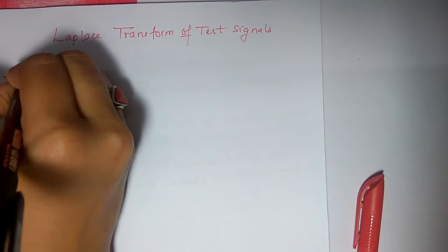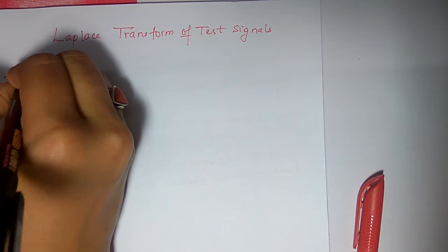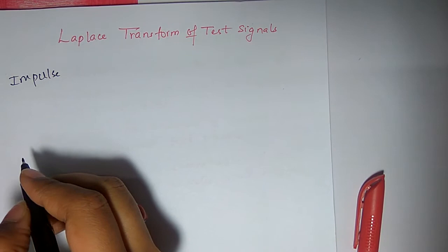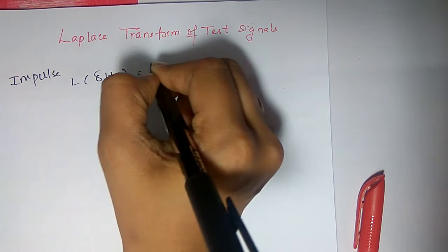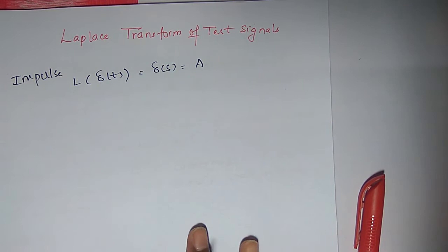Impulse: Laplace of delta of t is nothing but delta of s, s equals to constant a. So if you do the Laplace transform of impulse signal, you will get the constant a.